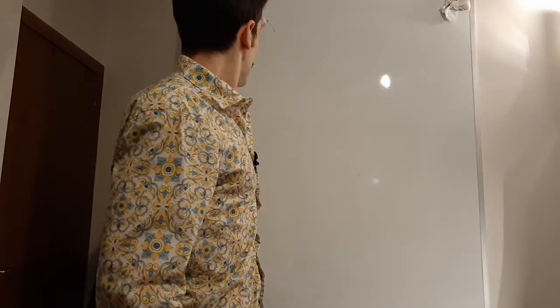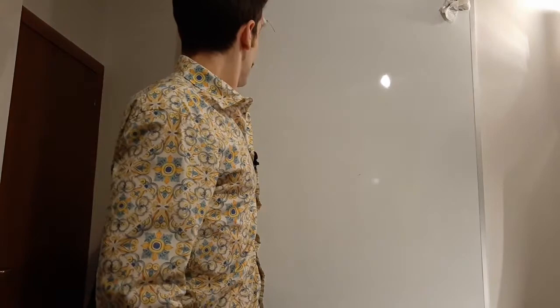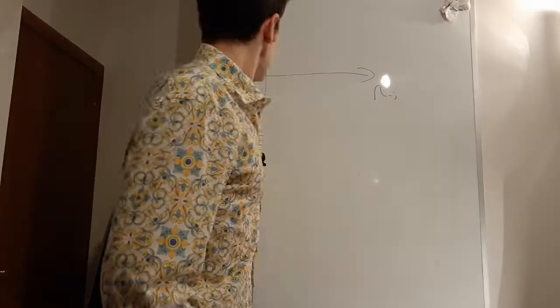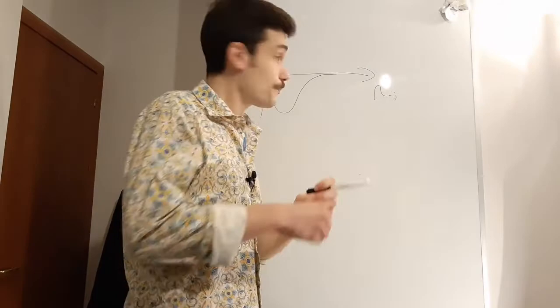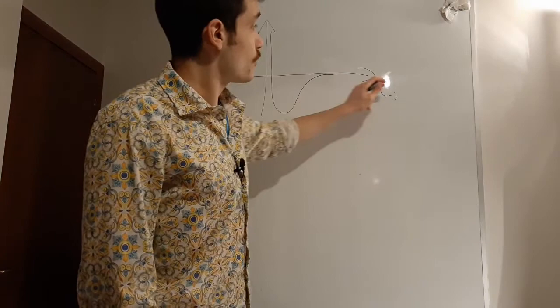So the form of the Lennard-Jones potential, where here is energy and here is rij, is something like this. You will have that the energy will go to infinity if we try to superimpose the nuclei, there will be an attractive dip, and then we will have a tail that will go to zero at infinity.